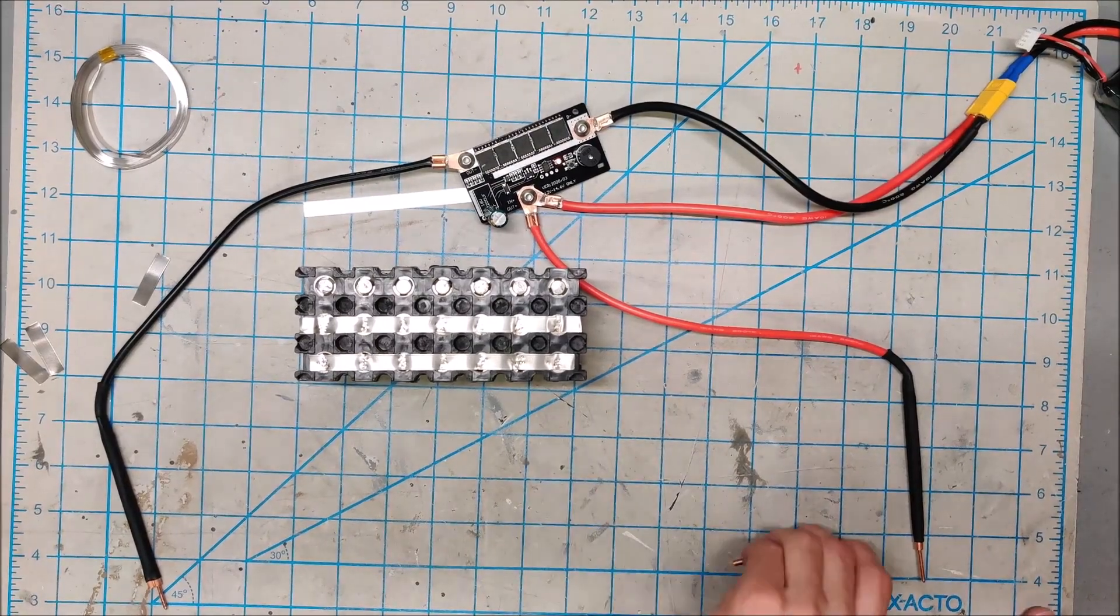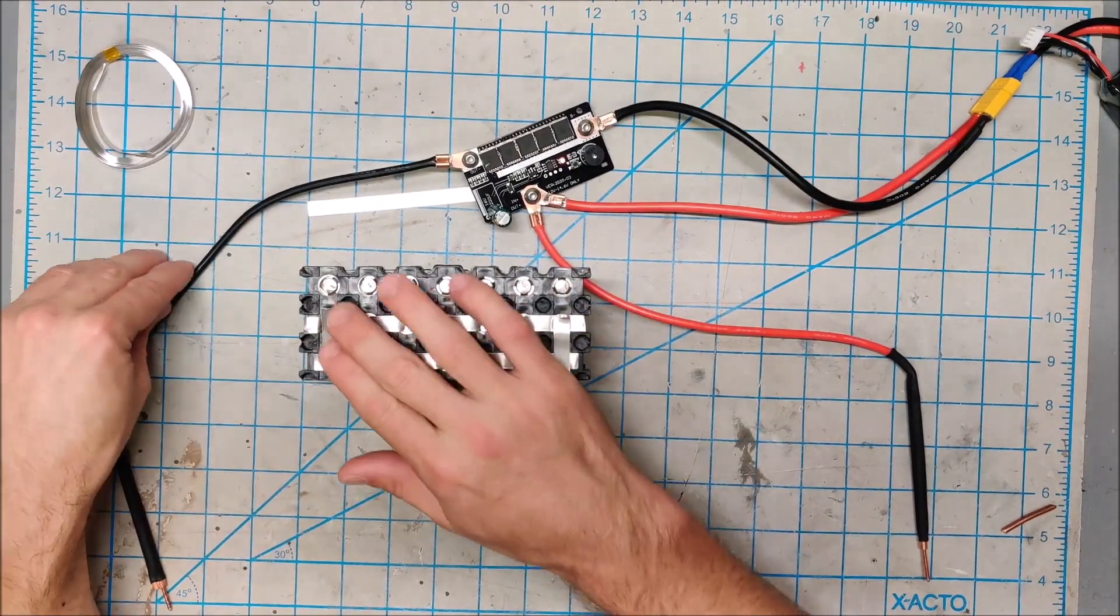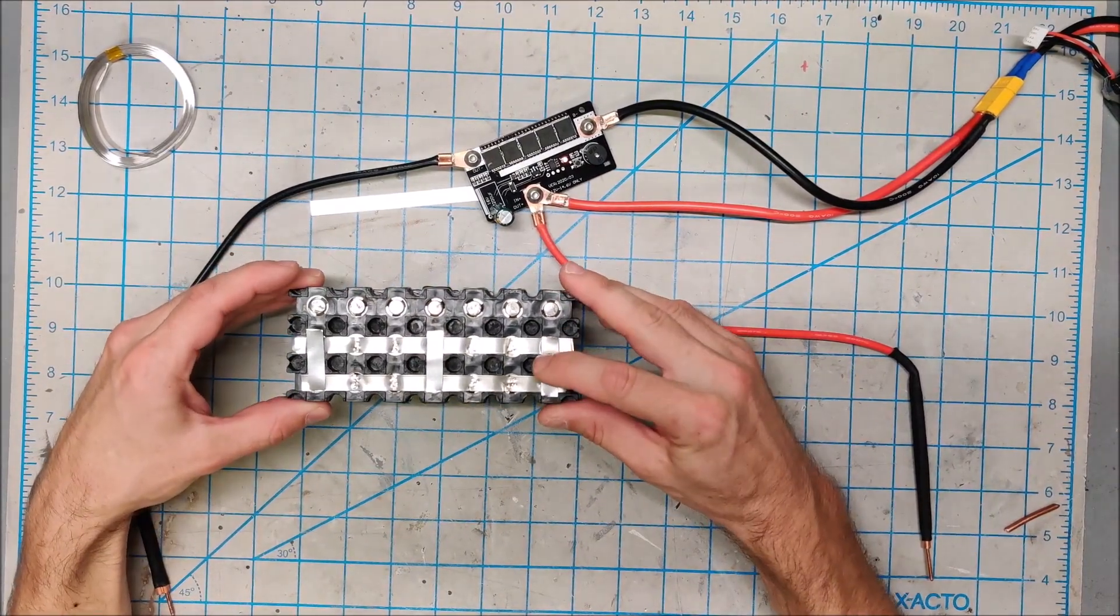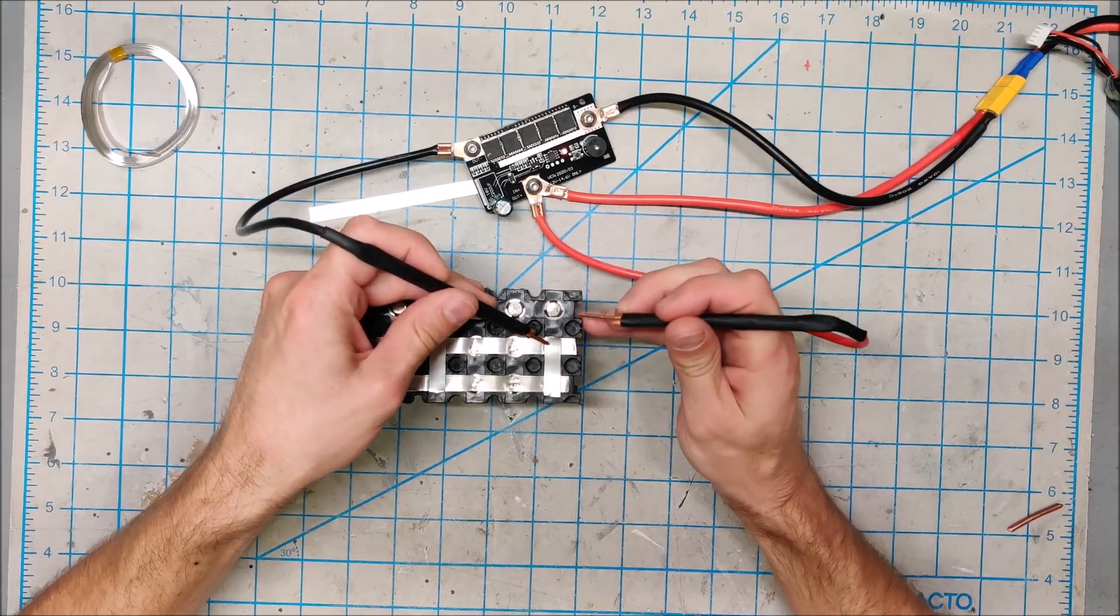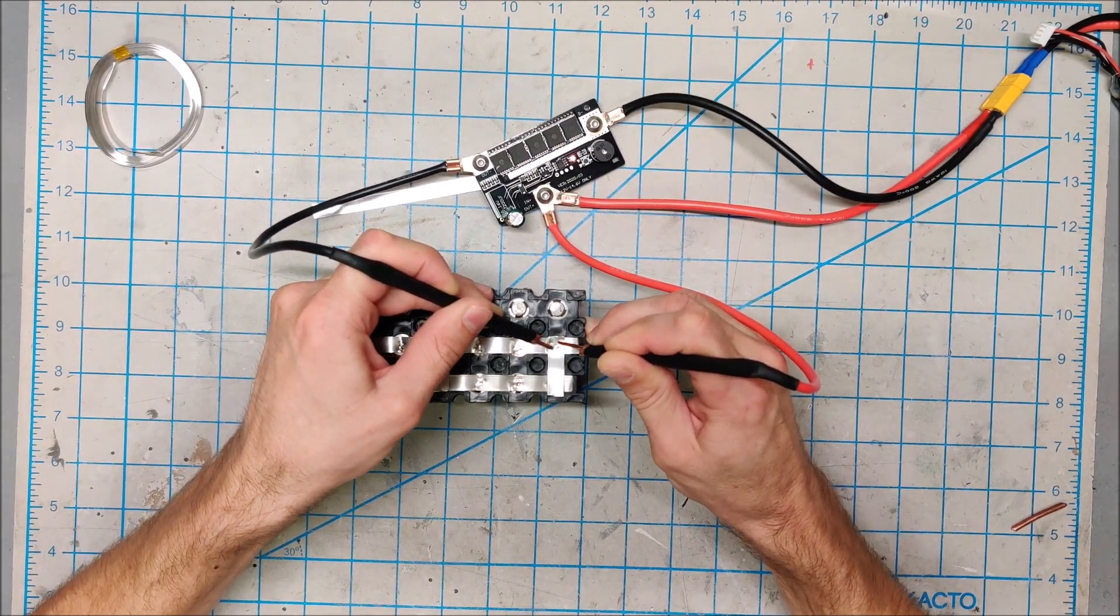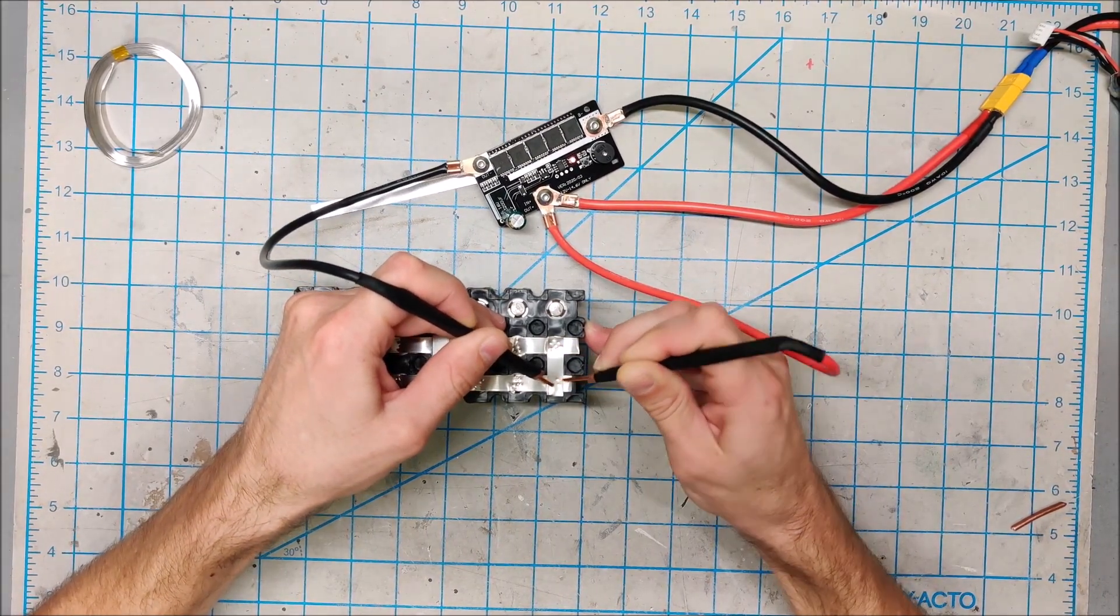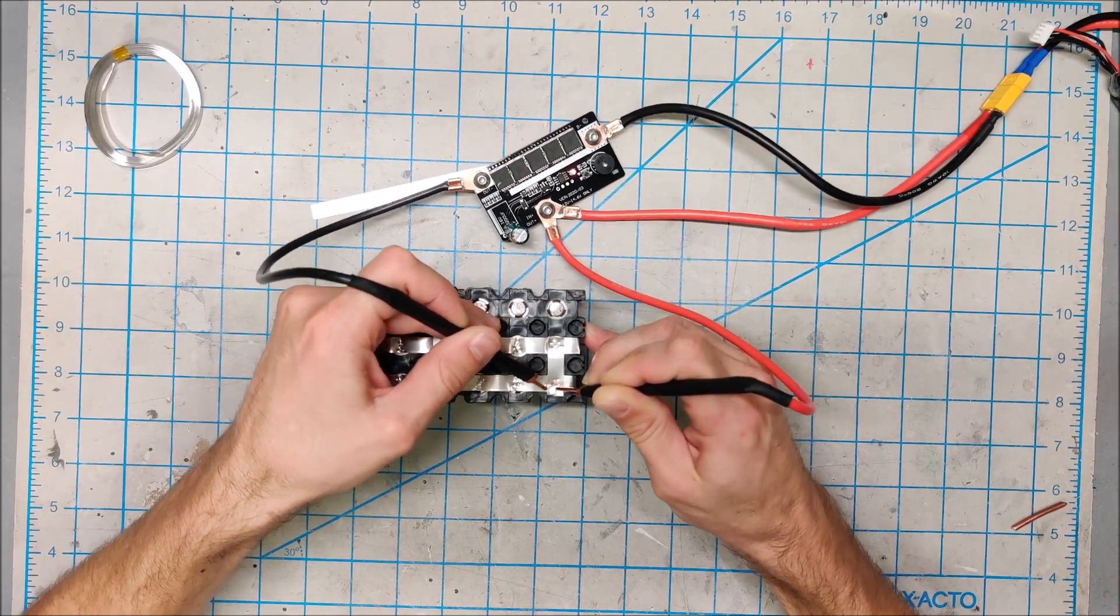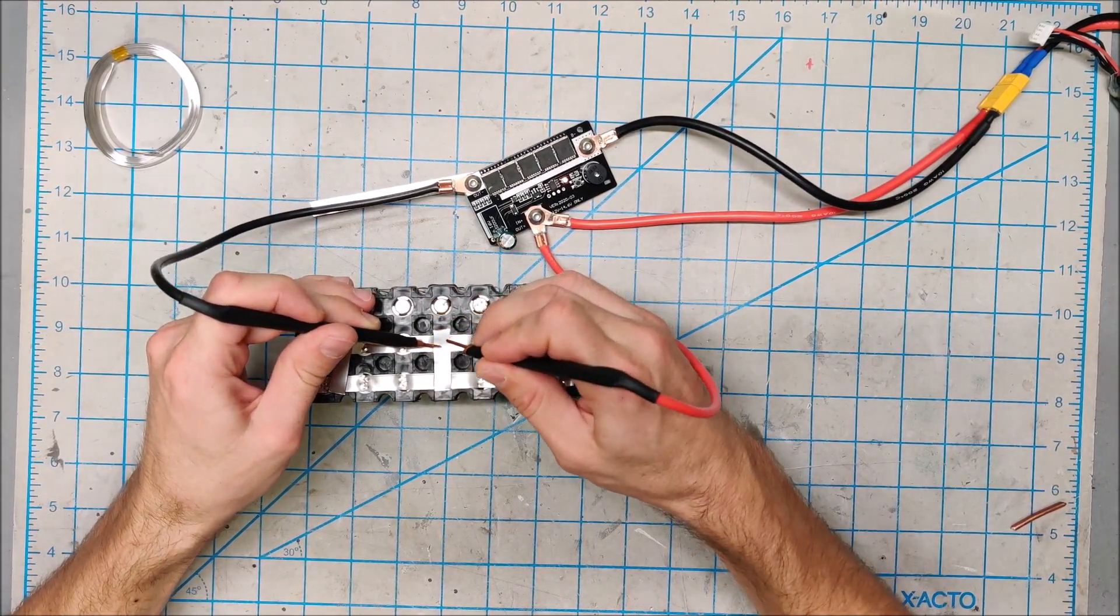Next thing we have to do is put the cross hatches on. These will connect these two sets of batteries in series. Some people were asking does it solder nickel to nickel, and the answer is absolutely. It does a really nice job actually nickel to nickel. That is definitely spot welded.